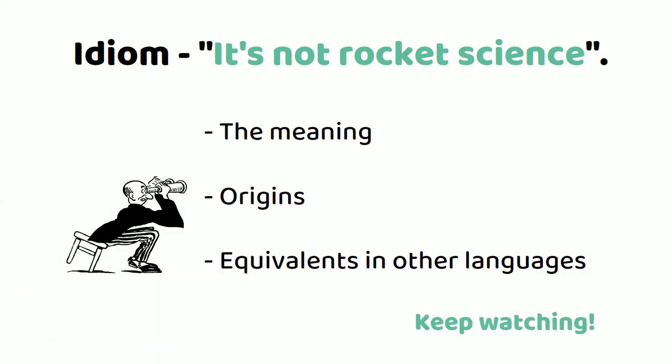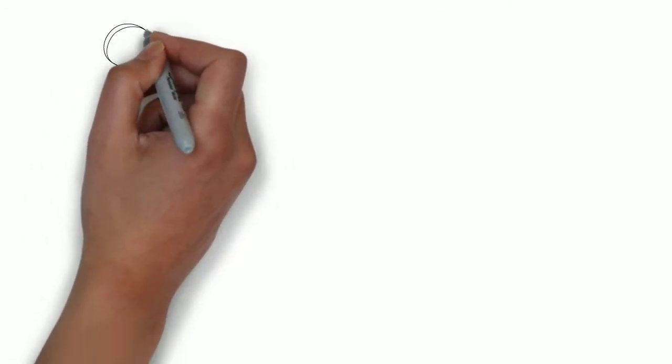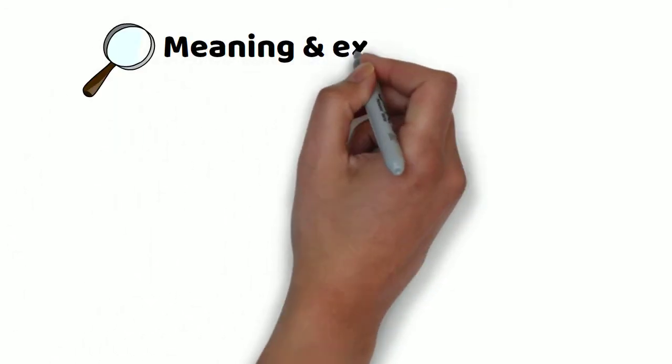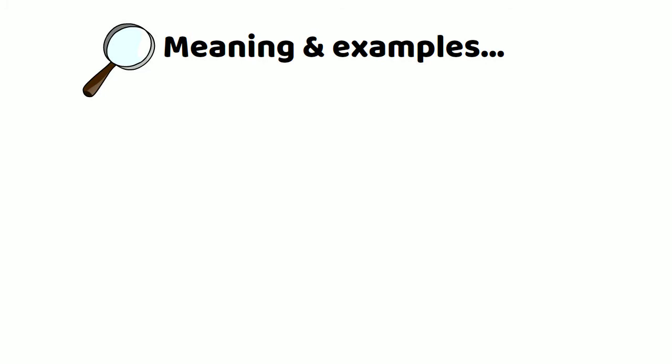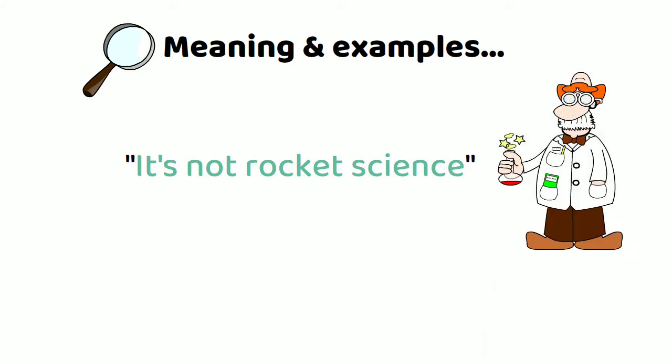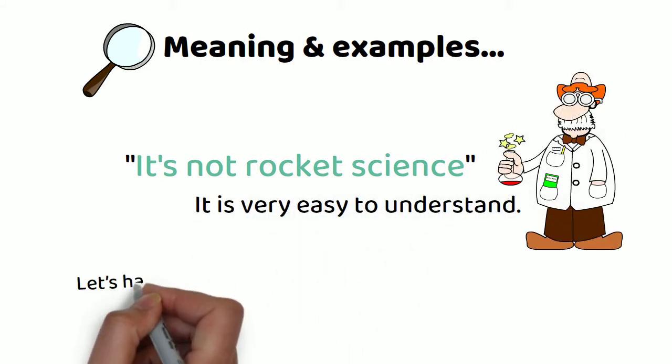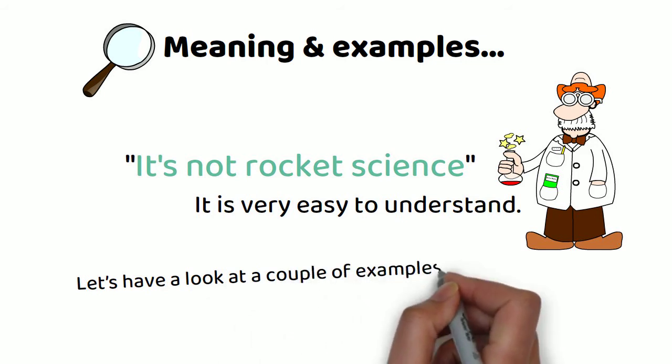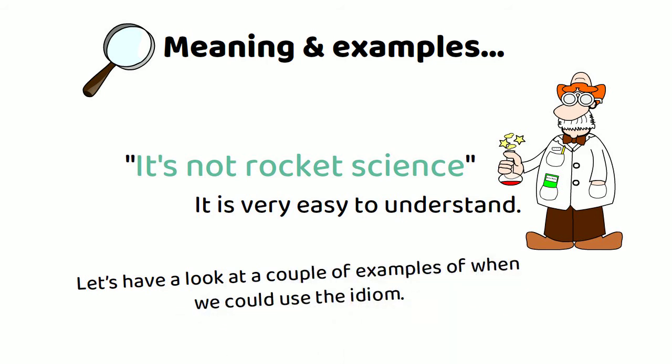Let's start with the meaning and a few examples. To say that something isn't rocket science means that it is very easy to understand. Let's have a look at a couple of examples of when we could use this idiom.